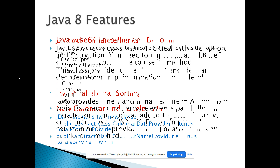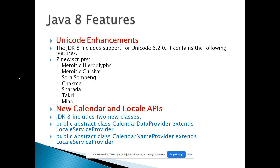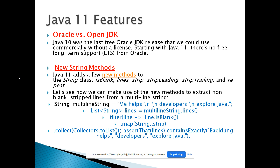Java 8 also introduced Unicode enhancements with new scripts added to the Unicode standard, which you can explore in the slides. Additionally, new Calendar and Locale API classes were introduced for handling internationalization operations, including the CalendarDataProvider and CalendarNameProvider classes. That covers the main Java 8 features.